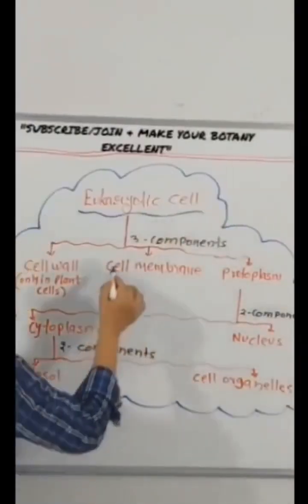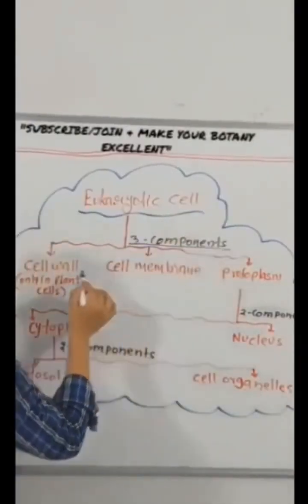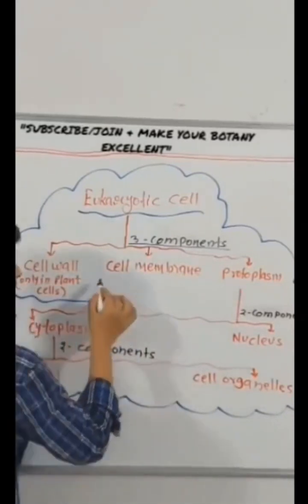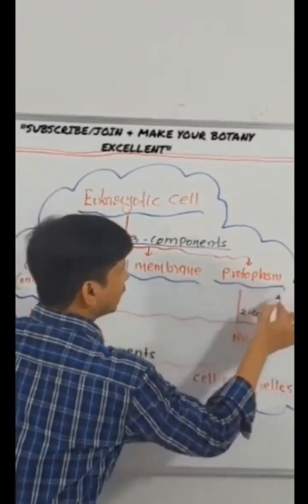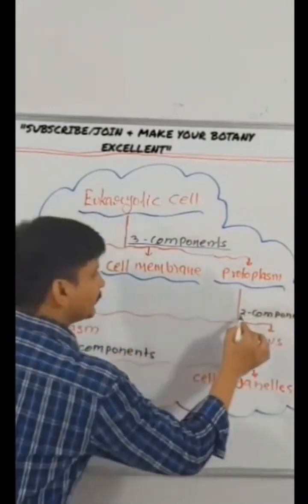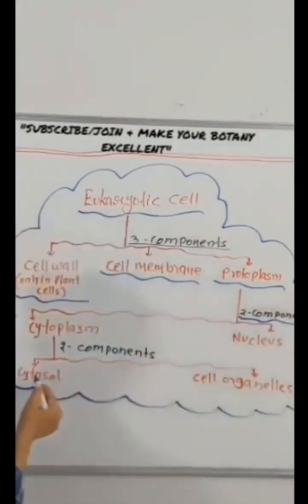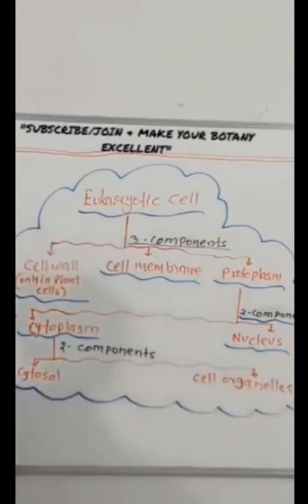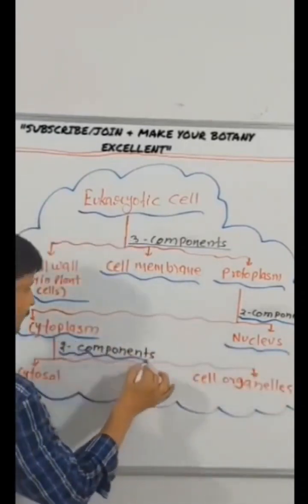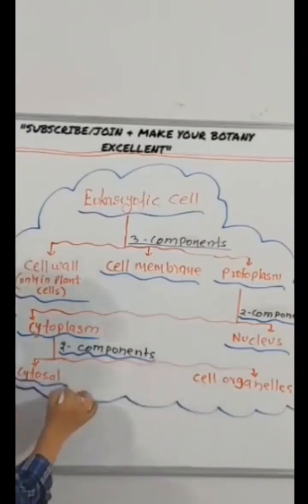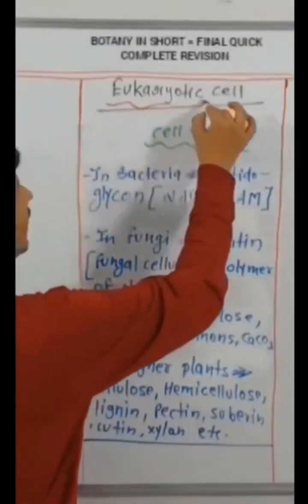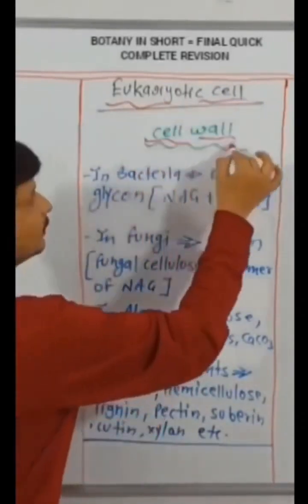Eukaryotic cell made up of three components: cell wall found only in plant cells, cell membrane, and protoplasm. Protoplasm made up of two components: cytoplasm and nucleus. Cytoplasm made up of two components: cytosol and cell organelles.